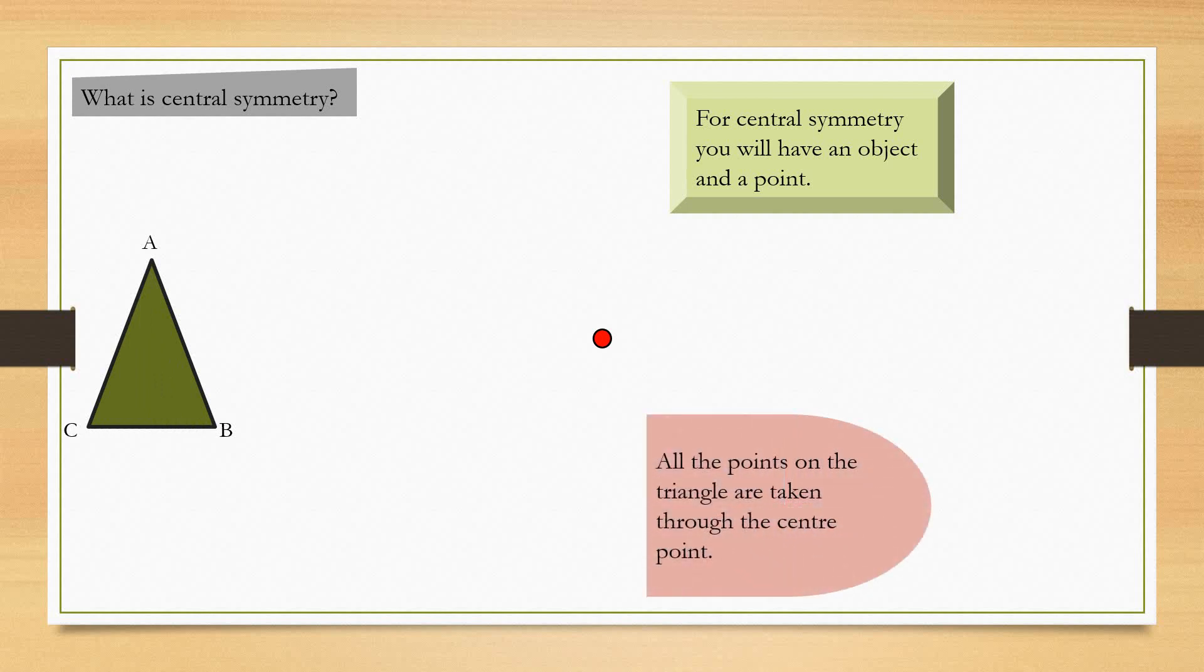All the points on the triangle are taken through the central point, the red point, like this.